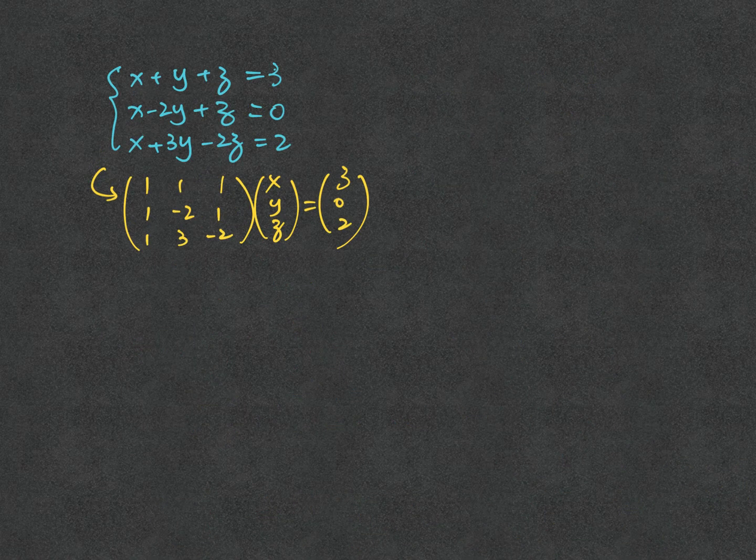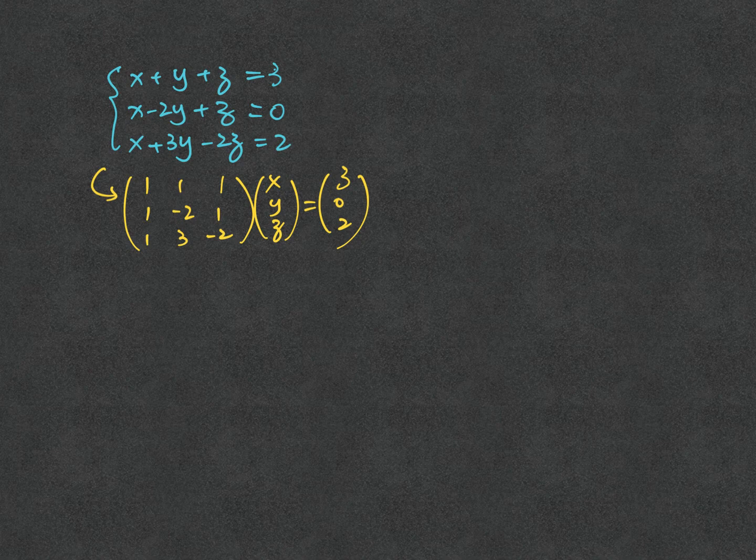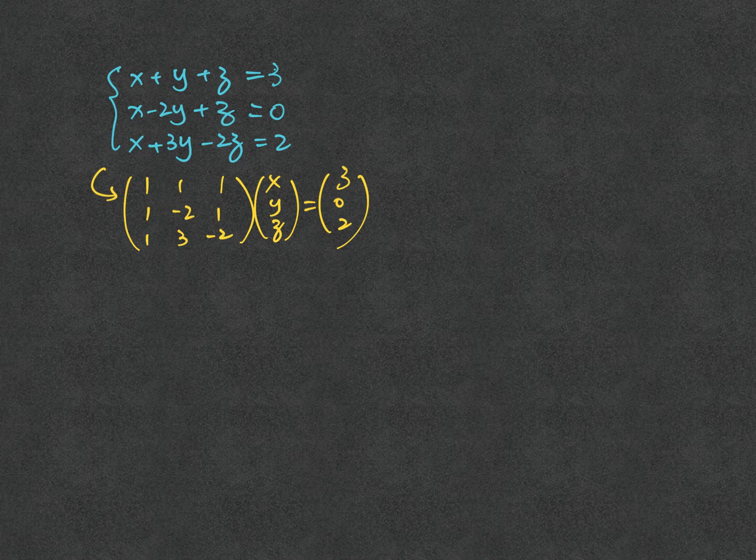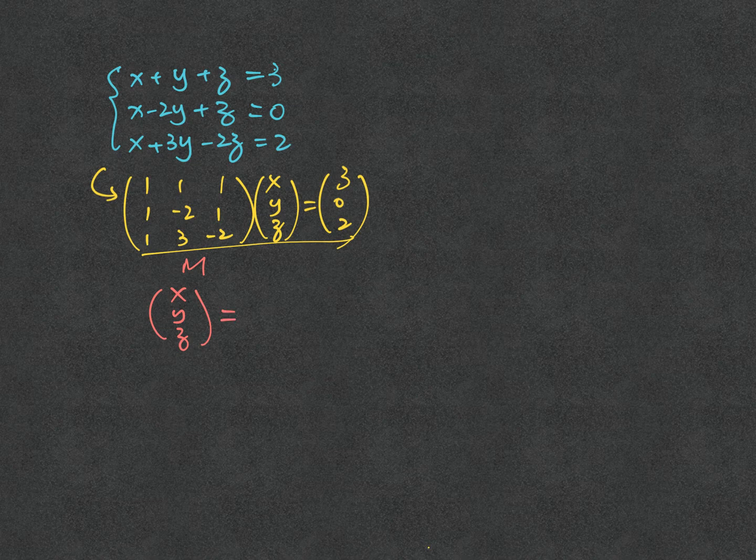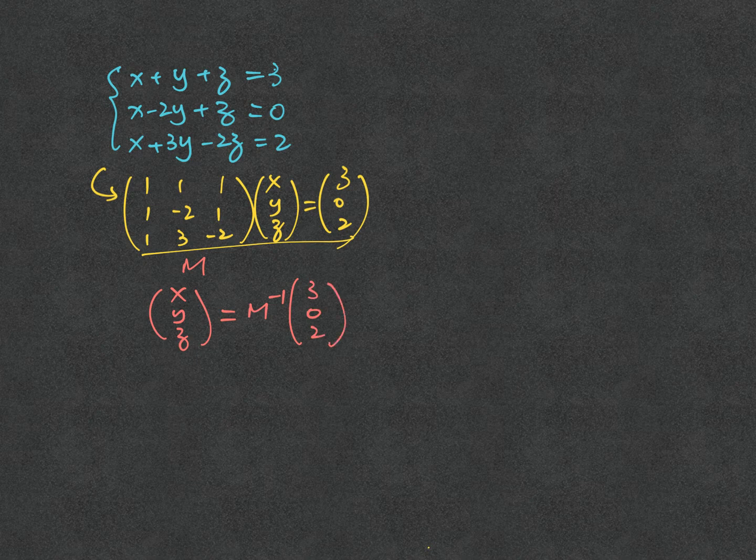Next, let's consider the case of three equations, three unknowns. Like in the case of two equations, two unknowns, we present the system of equations into a matrix form with the square matrix, we call it M. In order to find x, y, z, or to solve the equations, then we need to find the inverse of M and multiply it to (3, 0, 2) to get the answer.